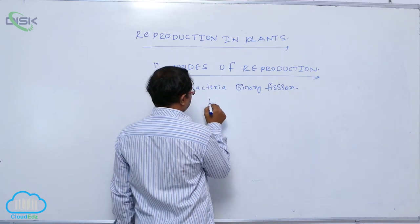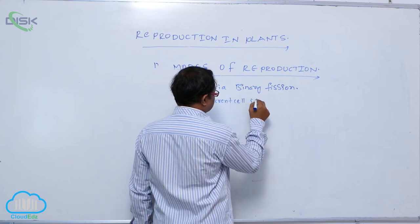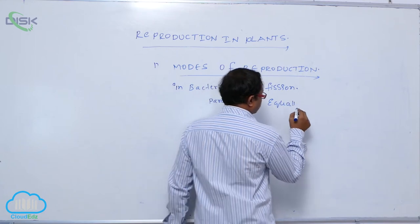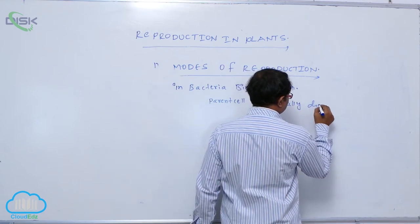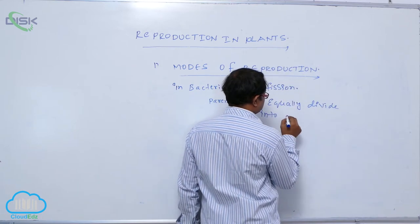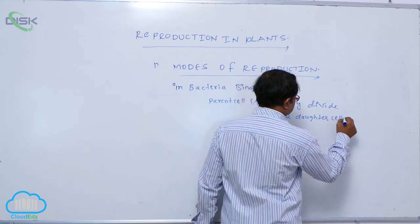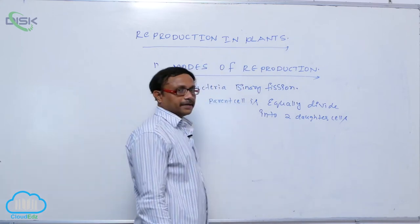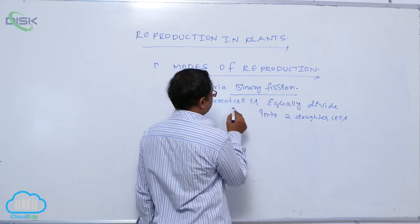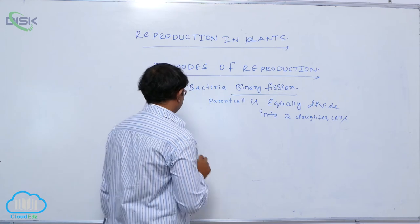Binary Fission means parent cell is equally divided into two daughter cells. That is known as Binary Fission. In bacteria, Binary Fission means parent cell is equally divided into two daughter cells.